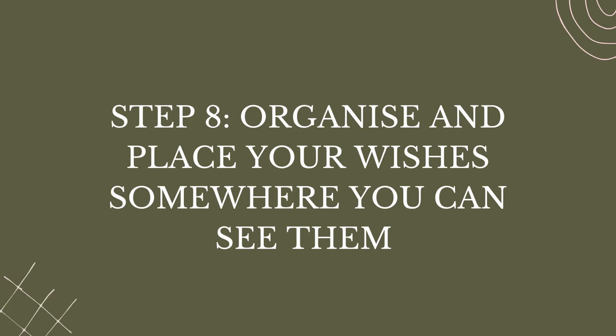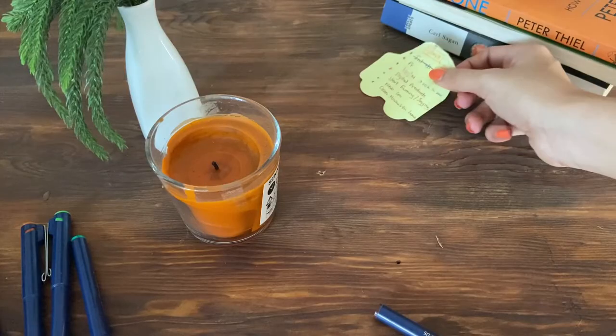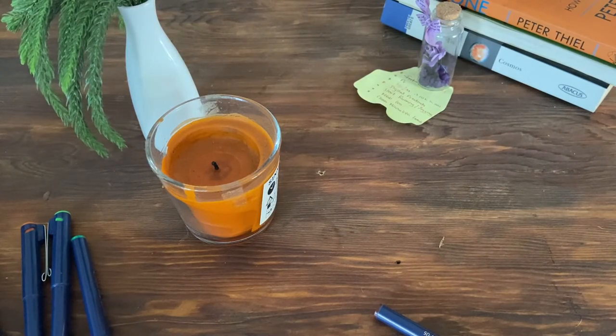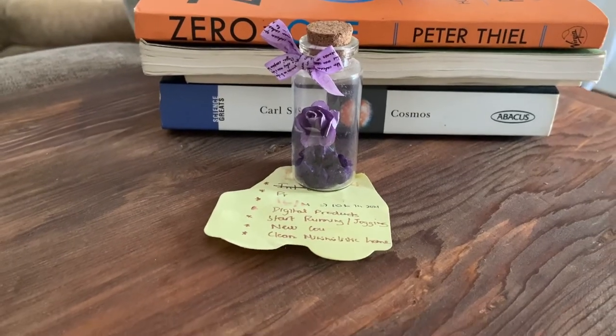Step eight: organize and place your wishes somewhere you can see them. You'll need to place these wishes somewhere visible — ideally every day. I have placed a piece of paper on my work desk where I see them daily. You can also pin them on your vision board. One of the reasons people never make their wishes come true is because they literally forget about them. Don't let that happen to you. Keep your wishes visible and keep working towards them.